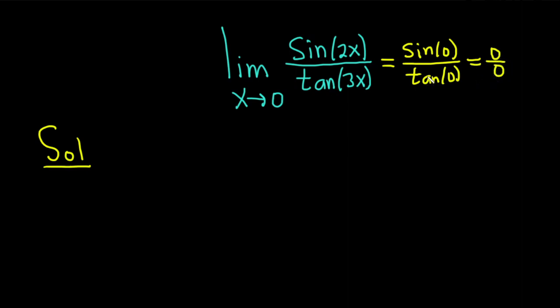So that doesn't work. However, 0 over 0 is called an indeterminate form. Whenever you have this specific indeterminate form, or some other ones like infinity over infinity, you can use something called L'Hopital's rule. L'Hopital's rule says that to take this limit, we simply take the derivative of the numerator and the derivative of the denominator.